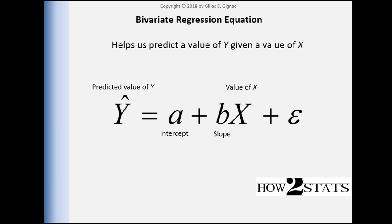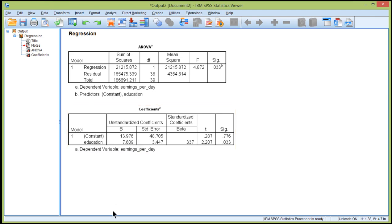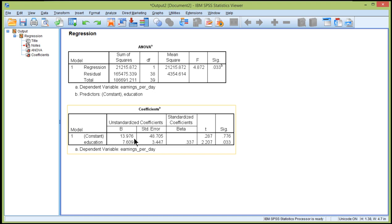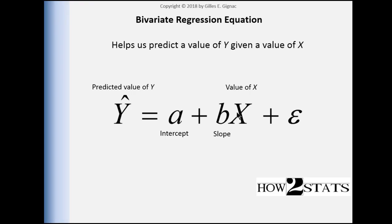We would add that to the $13.98 because the intercept is there. Everyone's starting with almost $14 as their predicted earnings if they had zero education. Then we move on to the slope. We just grab that number from the regression analysis, the unstandardized slope of $7.61, and we multiply that by a value of education that we're interested in.